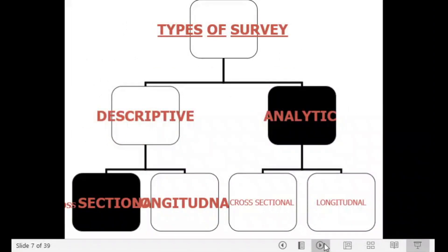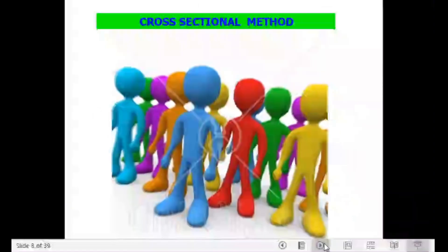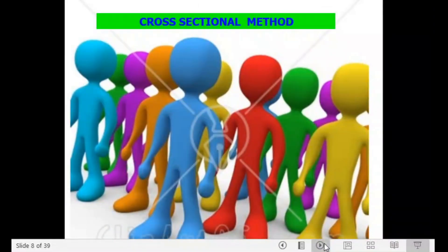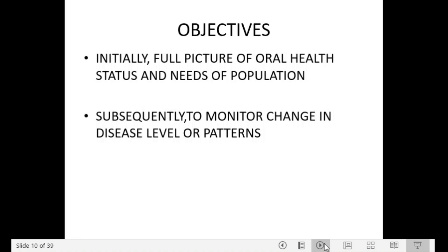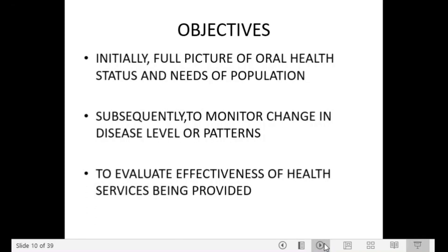There are two types of survey: descriptive and analytical. Descriptive surveys are further divided into cross-sectional and longitudinal. A cross-sectional survey is carried out on a cross-section of people at one point in time, while a longitudinal survey examines the same persons over a long period of time. The objectives are to find out the full picture of oral health status and needs, monitor changes in disease levels or patterns, and evaluate the effectiveness of health services being provided.